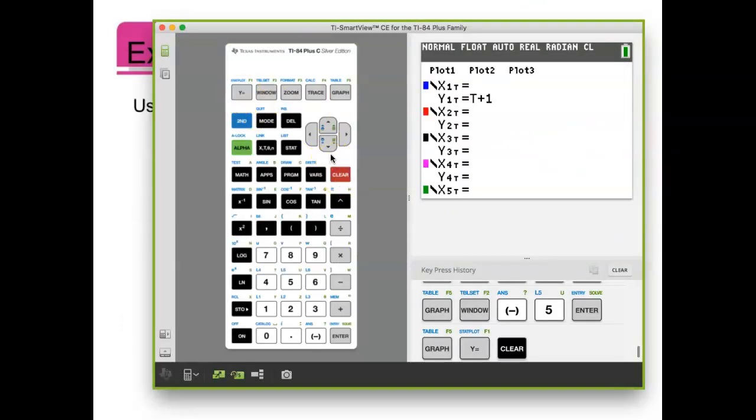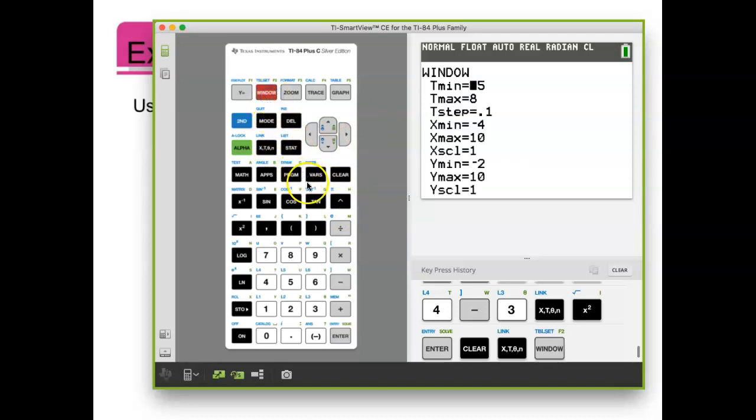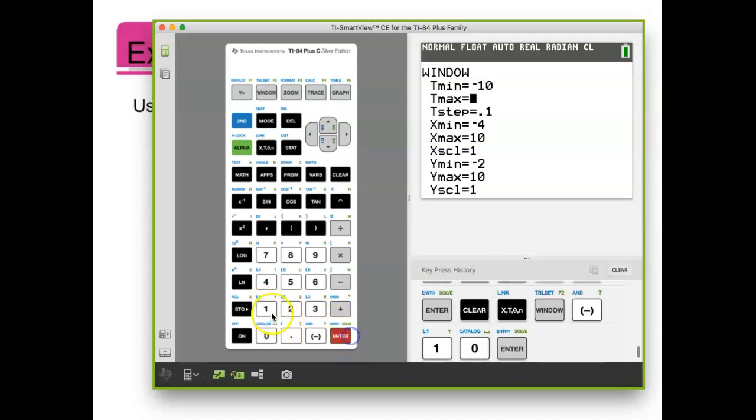So x is t to the fourth minus 3t squared, and y is just t. Now for this one, I don't know about my t value, so I'm just going to start with negative 10 to 10 and see if that gives me a decent picture. Keep my t-step as 0.1. My x min negative 5, x max is 5, and y min I'll do the same, negative 5 to 5.